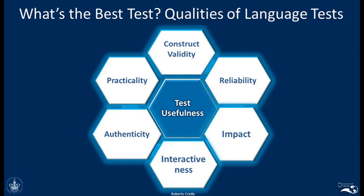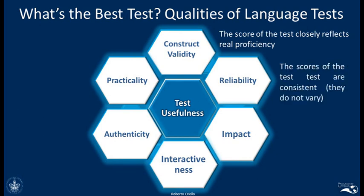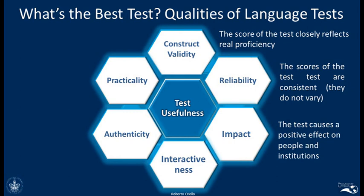How do you decide if a test is appropriate for your particular objectives? First, you need to make sure that the score really reflects your real proficiency — that is called construct validity. Second, you need to make sure that the scores are consistent and do not vary; every time you take the test, you should get about the same results. Third, impact refers to the effect the test causes on people and institutions — the test should be recognized widely, have a positive effect on your CV, and give you prestige and validity at an international level.